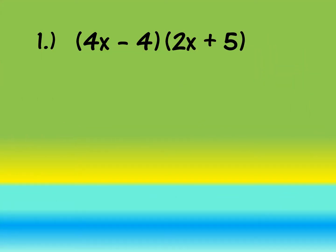Now let's proceed to our first example, using both the vertical method and horizontal method. In the vertical method, we write the terms vertically and multiply like we do with numbers. We have (4x minus 4) multiplied by (2x plus 5). First, multiply 4x and 2x: 4 times 2 gives us 8, copy variable x, add exponents to get x², giving us 8x².